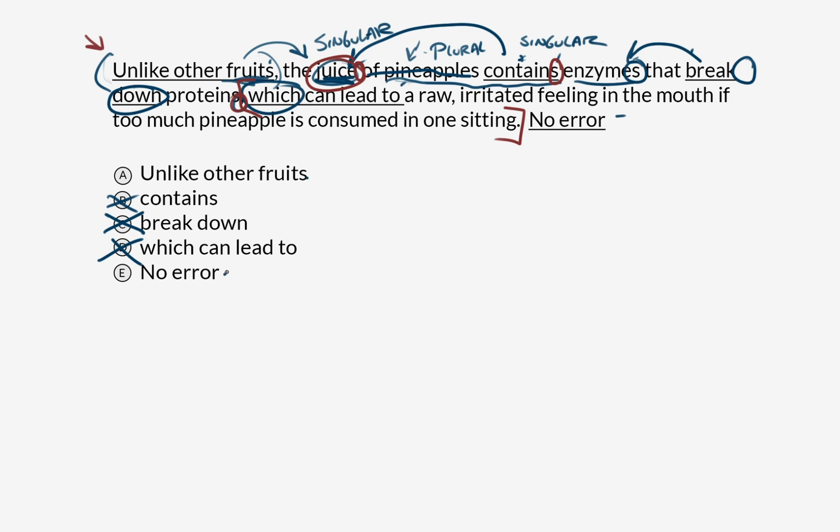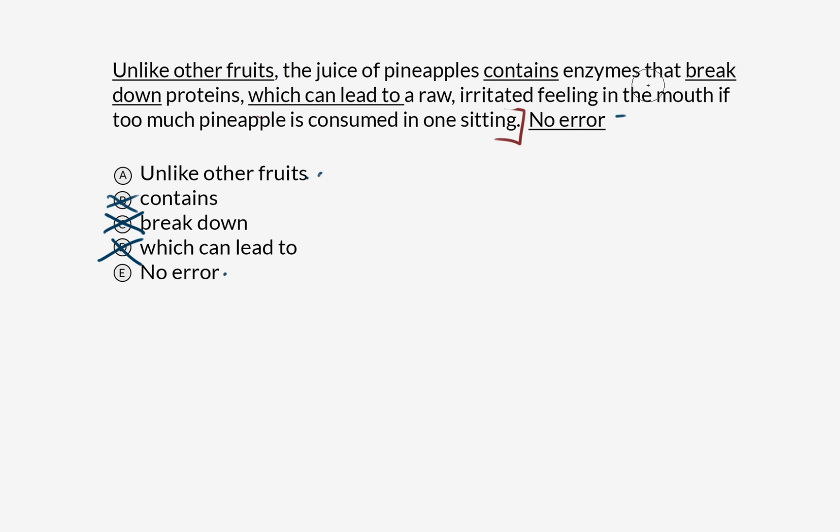Which leaves us either with no error or unlike other fruits. I'm going to clean this up real quick. Because we've used process of elimination to get rid of everything else, and so now the question is these two combatants squaring off. Unlike other fruits versus no error. Because there certainly are plenty of questions on Praxis writing that have no error. But what I want to get at here is the comparison that this is making, because it's comparing fruits to juice. And to me, that's a faulty comparison.